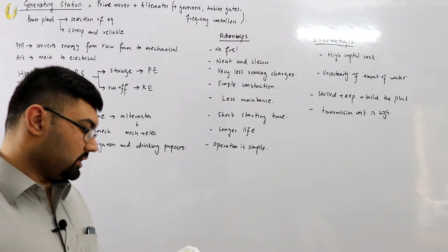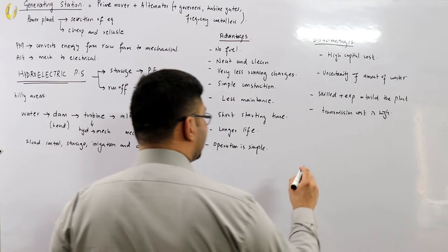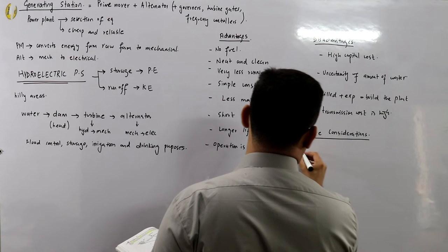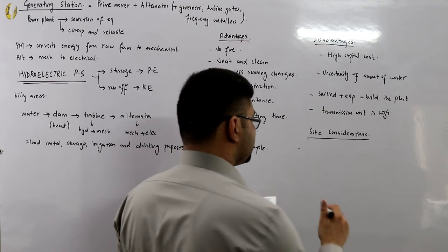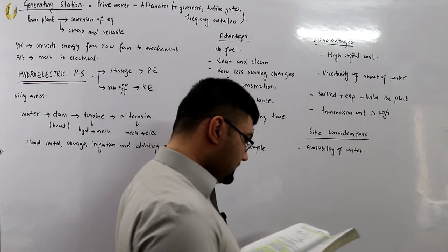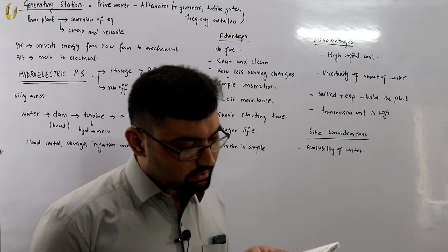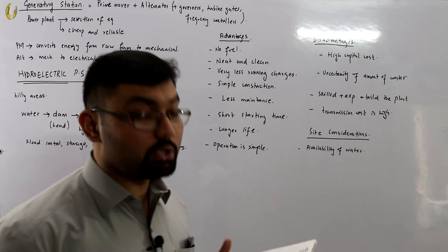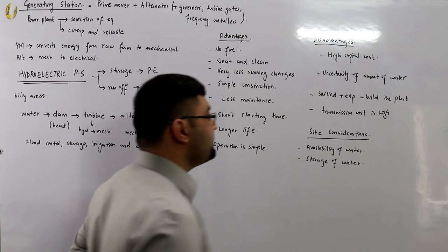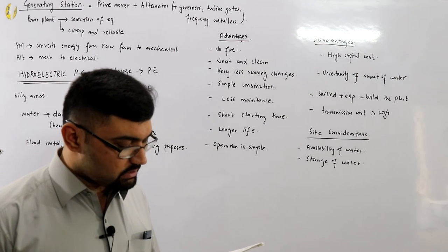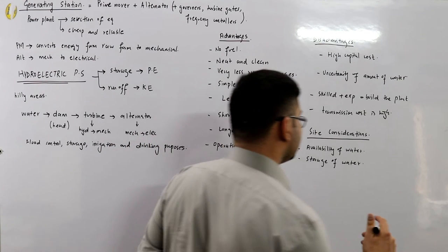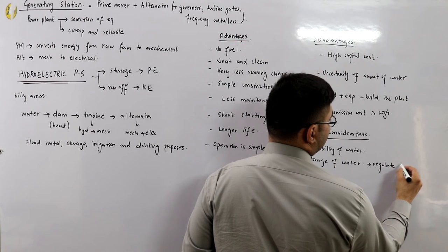Regarding the choice of site for a hydroelectric power station, the site considerations include: first, availability of water — since the primary requirement is a large quantity of water, such plants should be built where adequate water is available.